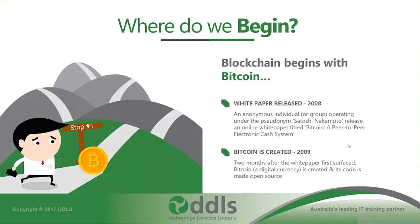So where do we begin? I'm going to start off by taking you through a progression of the technology — where it first started to emerge, and then following it through to where we are now. We're going to be following this little man in the bottom left-hand corner of your screen, and those mountains. Each one of those mountains represents a pivotal moment in the technology.